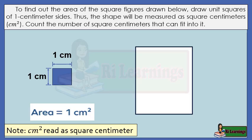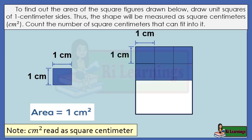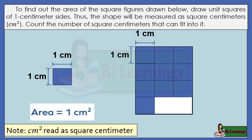How about this next rectangular figure? Let's count how many squares fit into it: one, two, three, four, five, six, seven, eight, nine, ten, eleven, twelve. There are twelve squares that fit inside the rectangle. The area of the rectangle is 12 square centimeters.